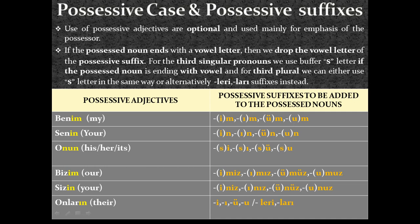For second person singular possessive adjectives, the suffixes are: in, ın, ın, un — for possessed nouns ending with a consonant. But if the possessed noun ends with a vowel, since these also start with a vowel, I have to drop these vowel letters to prevent vowel clash.